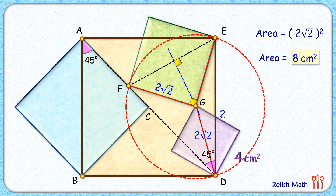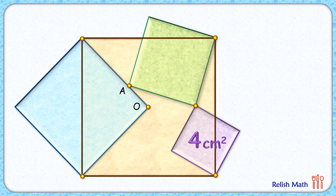Let's discuss the second approach — the logical approach. Here we exploit the fact that very limited data is provided. The brown square is fixed, and the blue square has no other option but to be drawn with its side as the diagonal of the brown square. For the green square, the vertex must lie on the side length of the blue square, and the purple square must share a vertex with the green square.